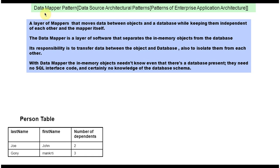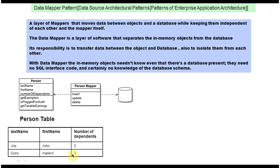To explain the Data Mapper design pattern, I have taken a Person table. It has three columns: last name, first name, and number of dependents. It has two rows — the first row represents Joy's information and the second row represents Goni's information. This is the Person class from which we can create a Person object.